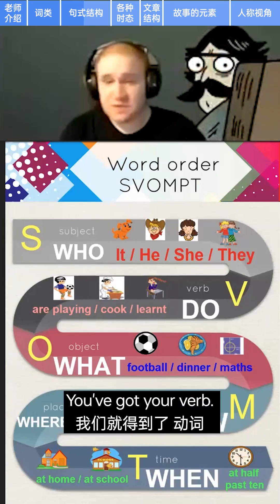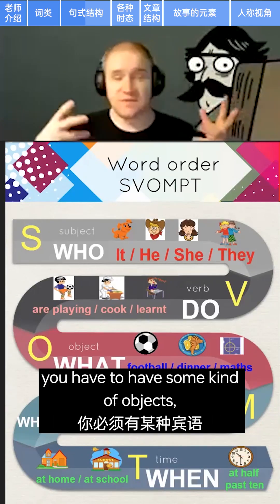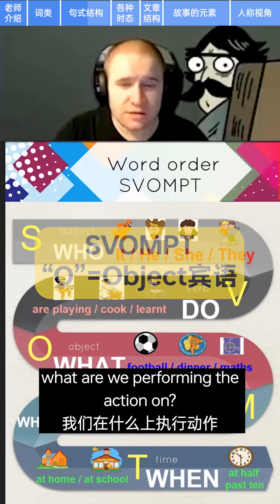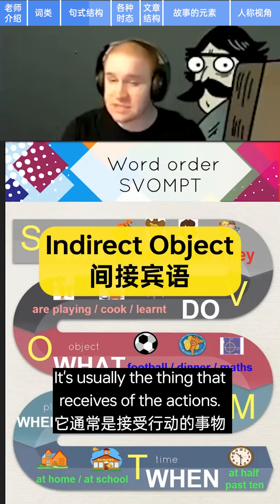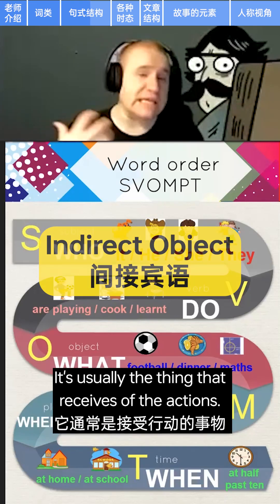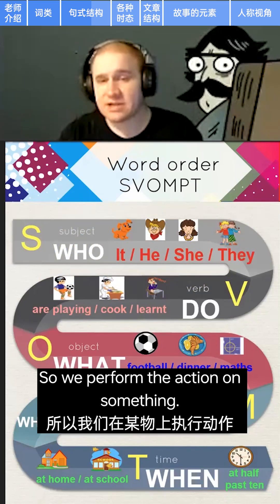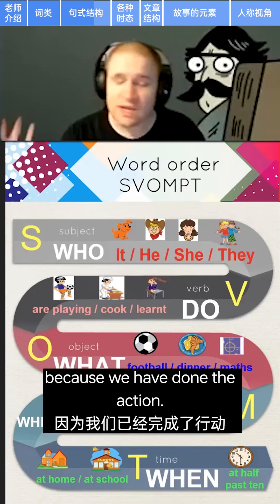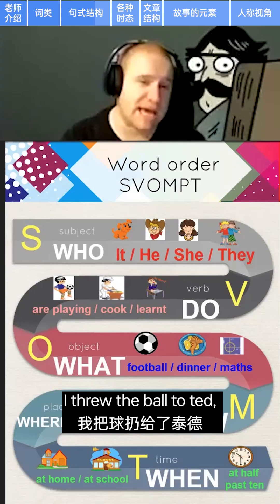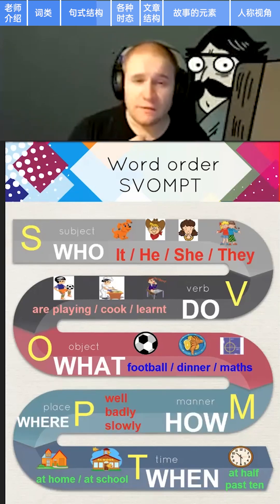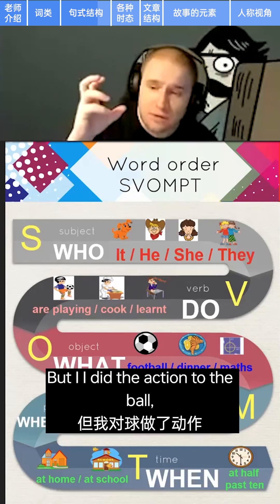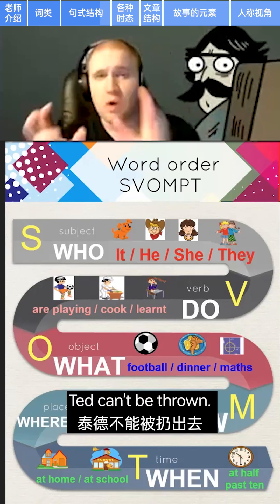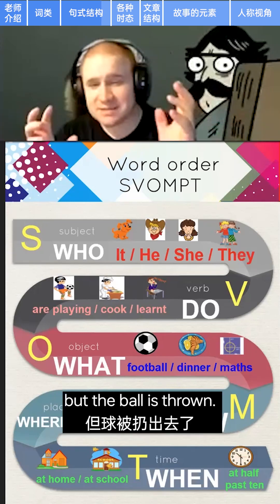You have to have the noun that does or is something, and then the verb. 'Dogs bark' — that's a full and complete sentence, because the subject is 'dogs' and what are we saying about dogs? They bark. After your subject and verb, you can have objects — the 'what' of the sentence. An indirect object is the thing that receives the action. For example, 'I threw the ball to Ted' — Ted is the indirect object, he gets the ball, but I did the action to the ball. I did not throw Ted — the ball is thrown.